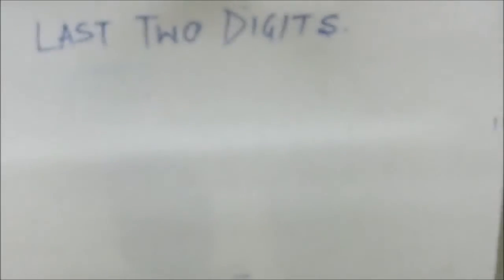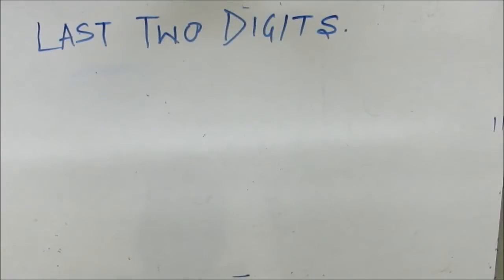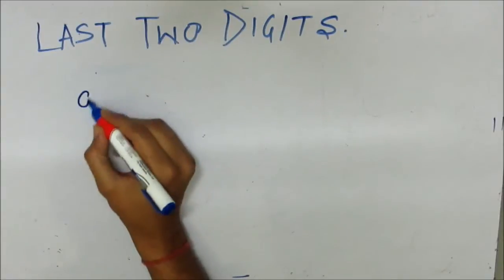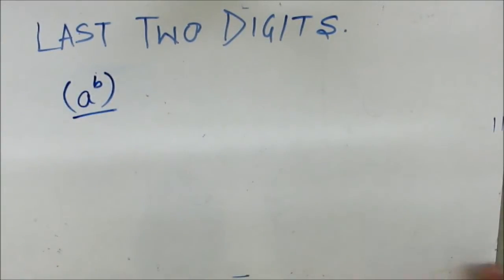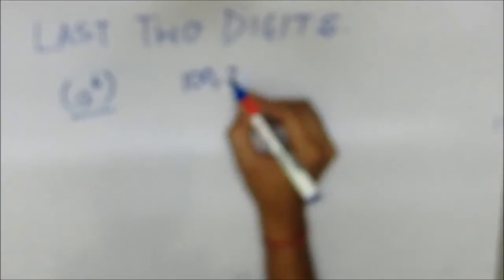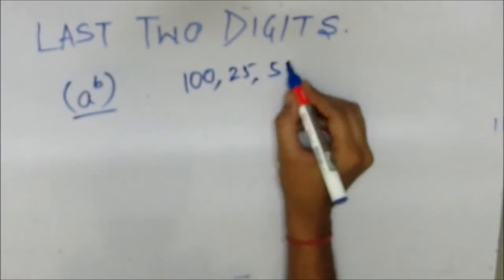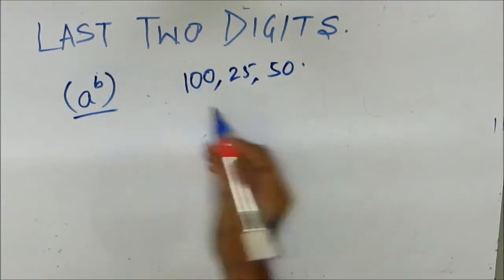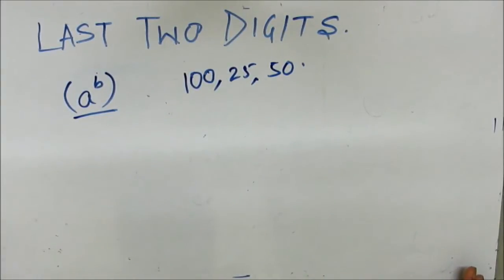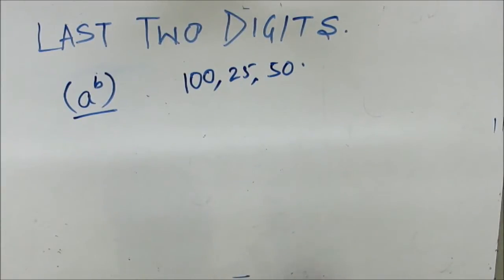Hello everyone! In this class we will learn how to calculate the last two digits of power expressions of the form A to the power B. These last two digits are extremely helpful for questions like remainder when divided by 100, 25, or 50, or if a question asks directly to find the last two digits. There is a very simple technique which can be used in CAT to reduce the time drastically.